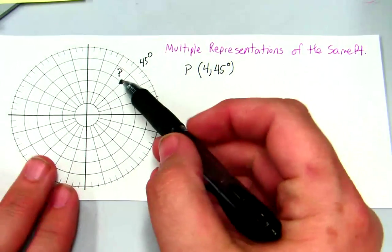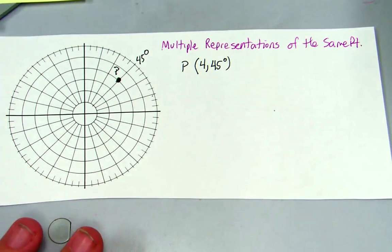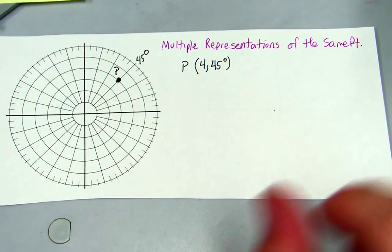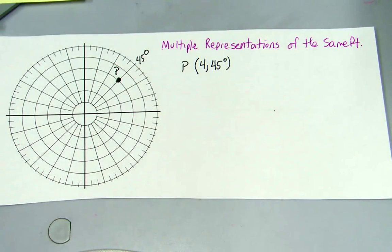So I started with point P, which is at 4, 45°. I'm going to use a few different colors here. What we want to do is find many different representations. The first thing I would do is draw a line that goes through the point.